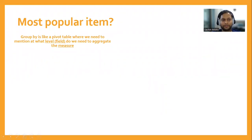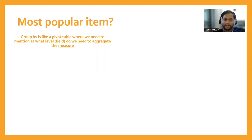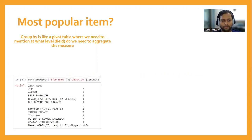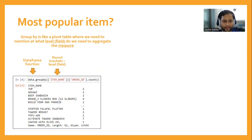The first question is: which is the most popular item? For this, we'll use group by, which is like a pivot table where we mention at what field level we need to aggregate the measures. We want to look at all items and their number of orders. We use 'data.groupby()' — the data frame function — and mention at what level we want to aggregate. If I'm mentioning one field, I use a single square bracket; for multiple fields, two square brackets.